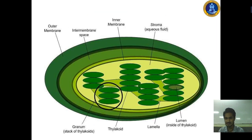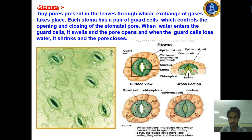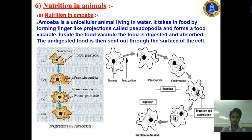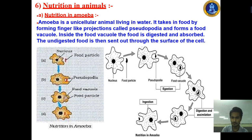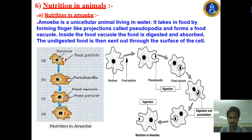We also discussed what chlorophyll is and how it works — this is a two-marks question. We discussed the working of stomata, and then we discussed nutrition in amoeba. There are four points to remember: ingestion, digestion, assimilation, and egestion. Amoeba has pseudopodia — fake hand-like extensions — with which it takes in food, digests it, assimilates it into energy, and then ejects the waste outside.